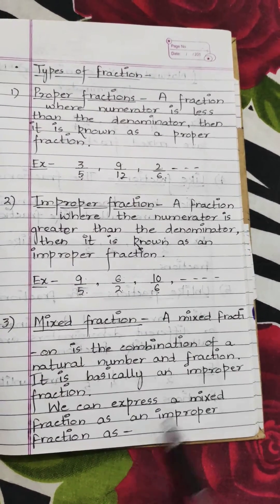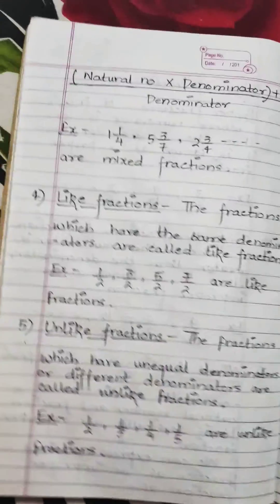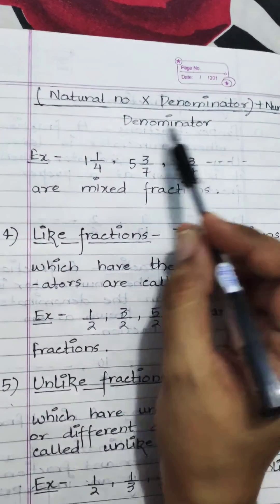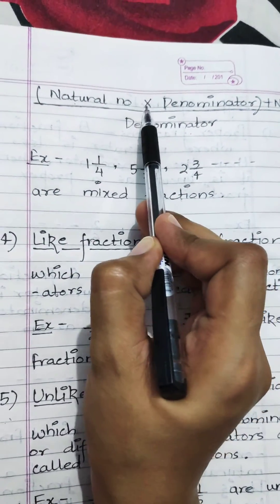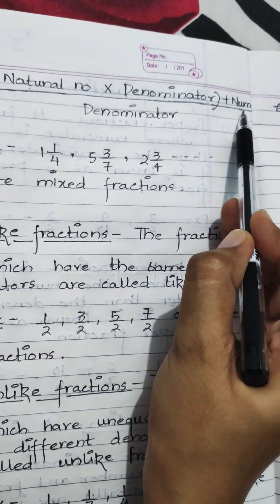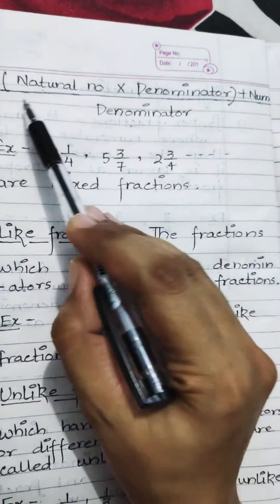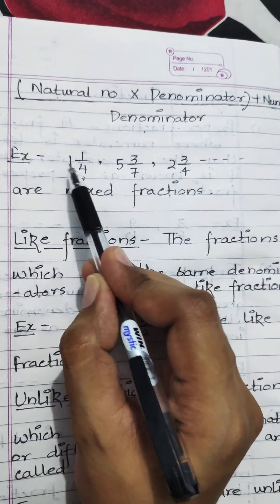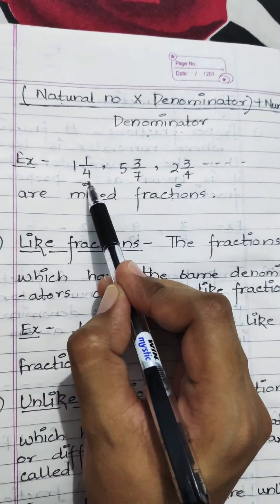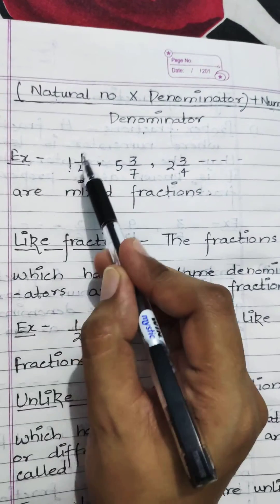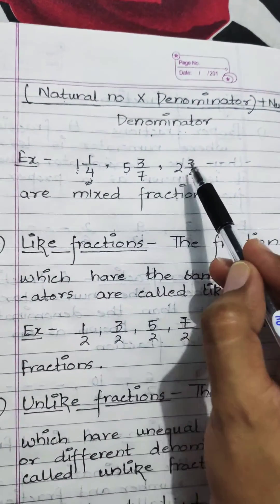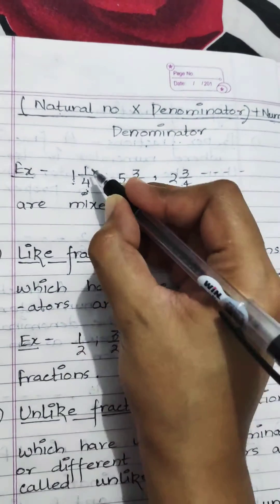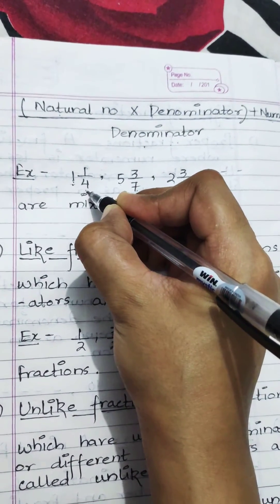We can express a mixed fraction as an improper fraction. The formula is: natural number multiplied by denominator plus numerator, divided by denominator. Mixed fractions are written in this form — for example: one whole one upon two, five whole three upon seven, two whole three upon four. The natural number part combined with a proper fraction gives the mixed fraction.